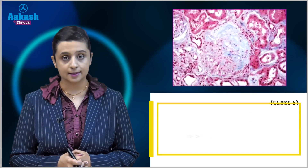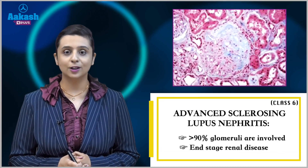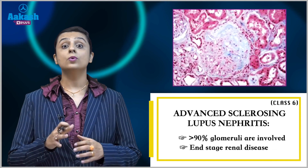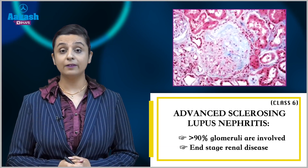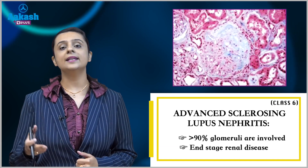Class 6 is advanced sclerosing lupus nephritis, where more than 90% of the glomeruli will be sclerosed. This represents end-stage kidney disease.